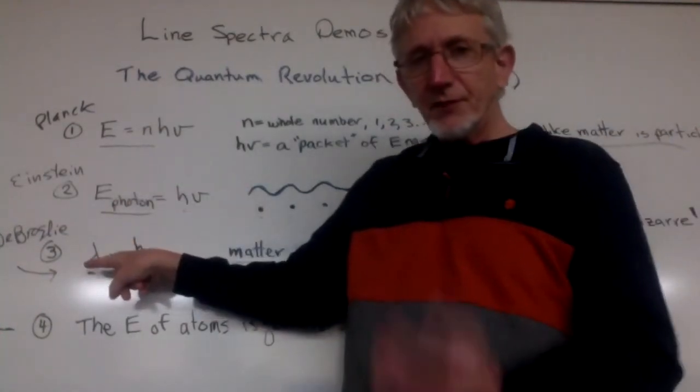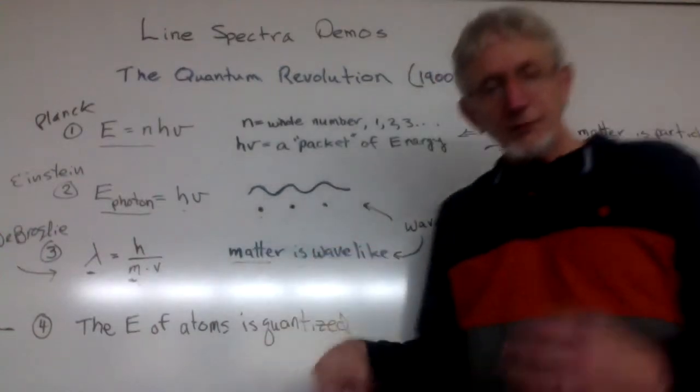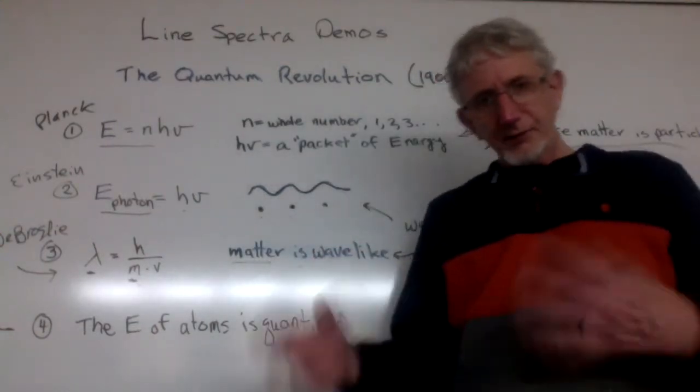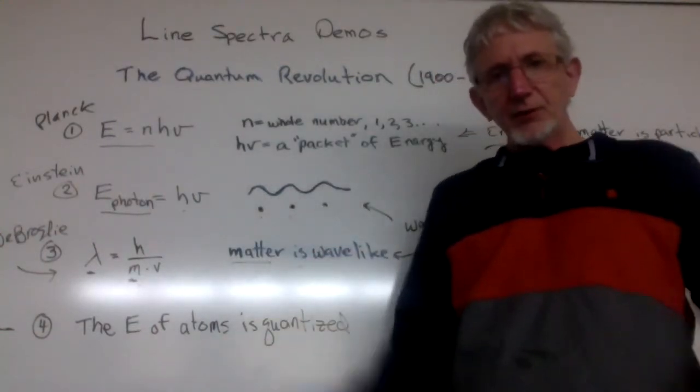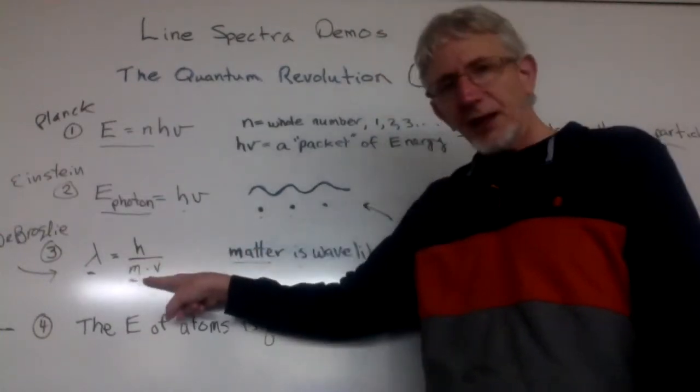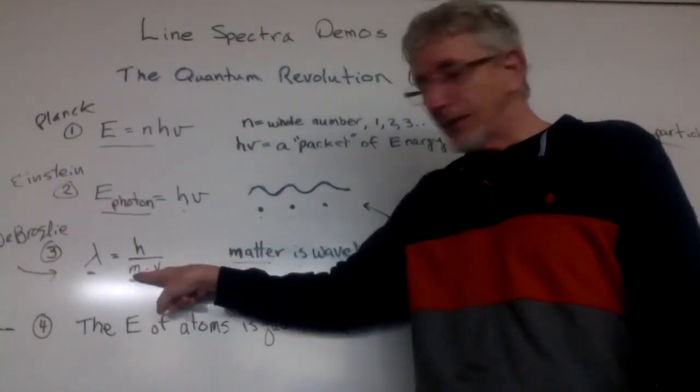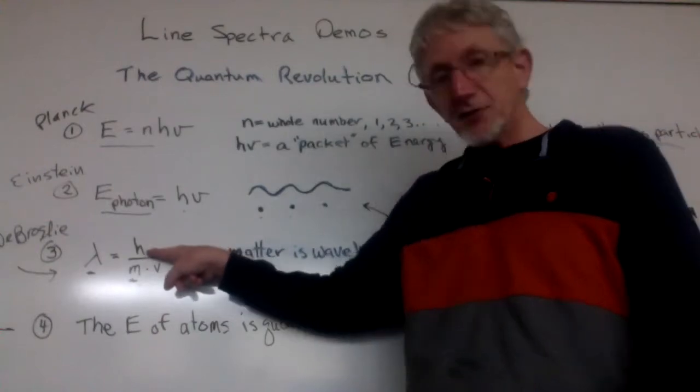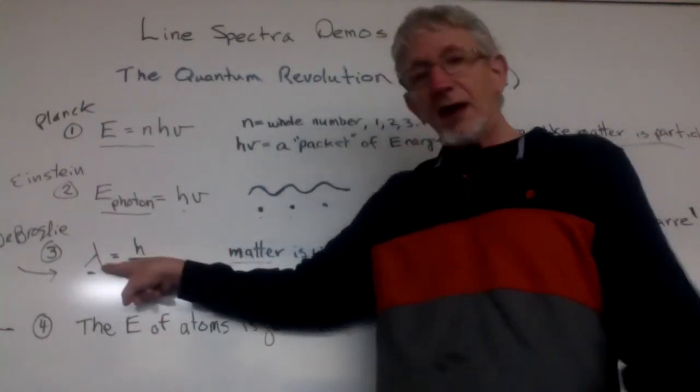And then de Broglie's equation that showed that not only is light a wave particle kind of phenomenon, but all matter is as well, because his equation shows that anything that has mass and it's moving, mass is m, v is velocity, h is Planck's constant, will have a wavelength.